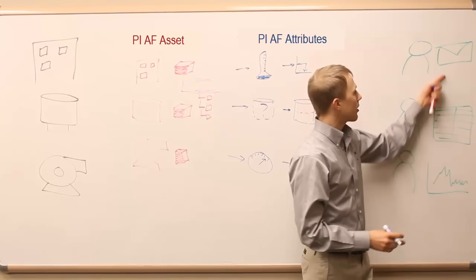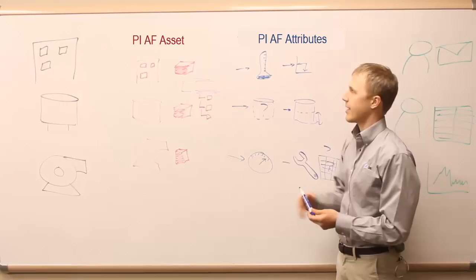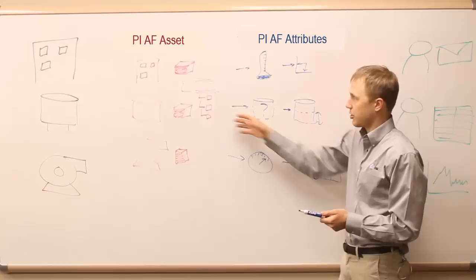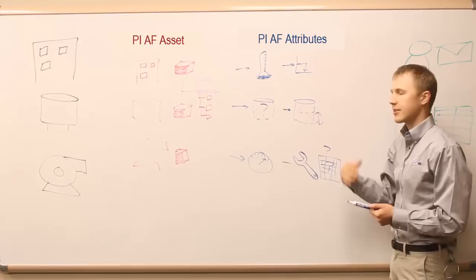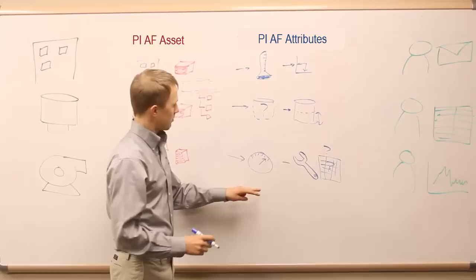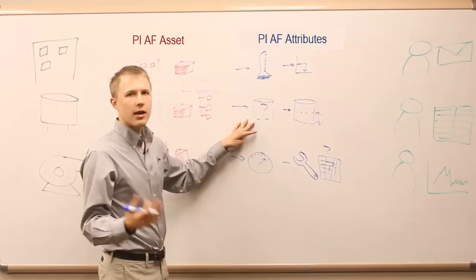These are all attributes that describe something important about our asset. An attribute is something we could put into a spreadsheet, a graph, or an email. When you go in and find an AF structure and open an asset, you can find its attributes, and they have a variety of different types that we could use.